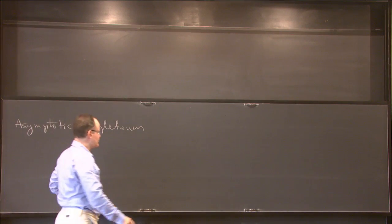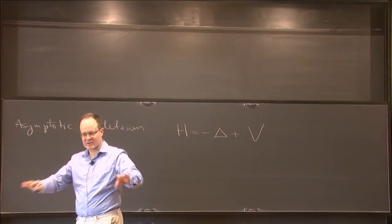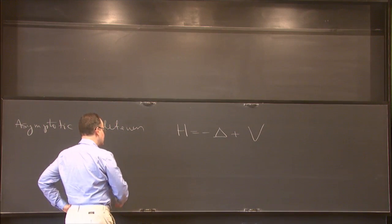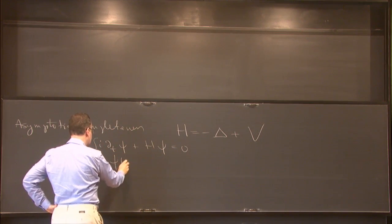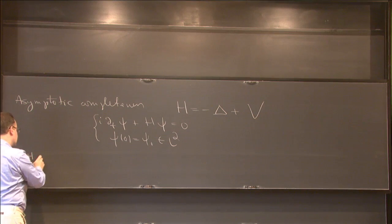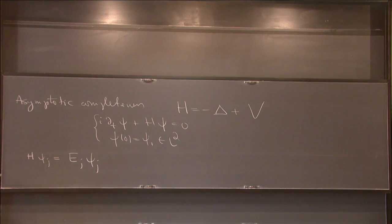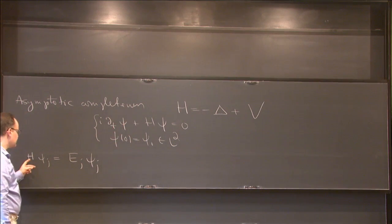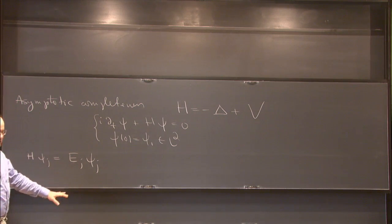Asymptotic completeness in quantum mechanics. You have H = -Δ + V. You assume that V is real-valued and decays nicely at infinity in some sense — a short-range condition, typically like in Agmon's paper. It took a long time to prove the following theorem: under short-range assumptions on V, you have only finitely many eigenvalues — that's if V decays faster than an inverse square power.